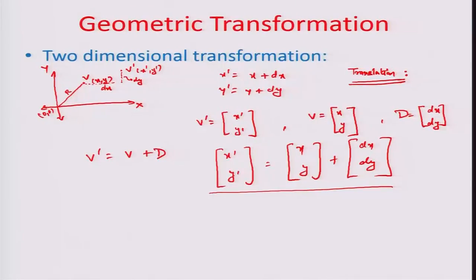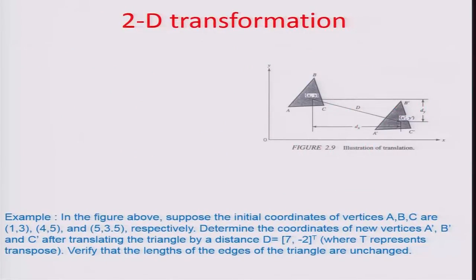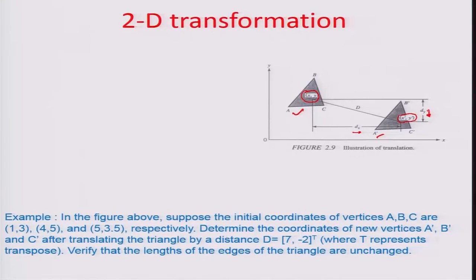Let us look at an example problem. We have triangle ABC, and it moves to a new position A-dash B-dash C-dash. The centroid of this triangle was at coordinate (x, y) earlier and has moved to new coordinates (x-dash, y-dash) by exactly dx in the x-direction and dy in the y-direction. Here, dy decrements the value of y and dx increments the value of x.